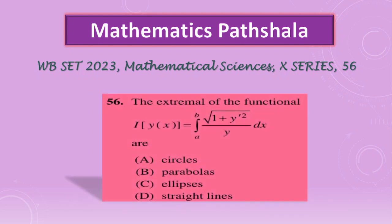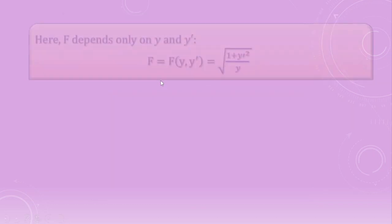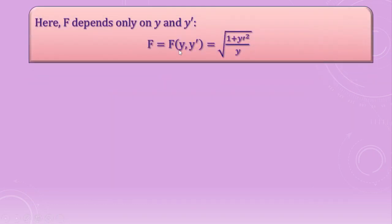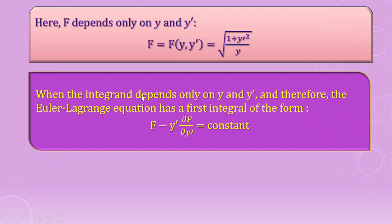Now let's go to the next problem of calculus of variations, question number 56 from booklet series X. Here we have to find the extremal of the given functional and identify whether it represents circles, parabolas, ellipses, or straight lines. We observe that the given functional depends only on y and y', where f(y, y') equals sqrt(1 + y'^2) / y.